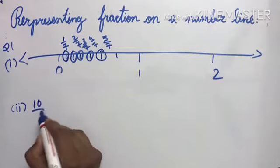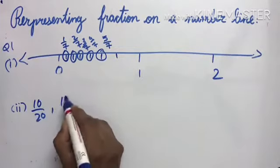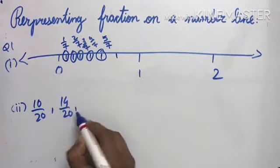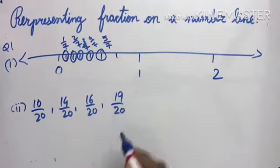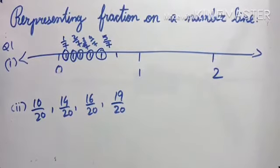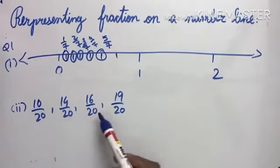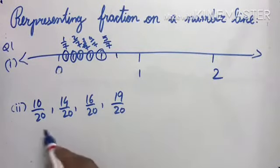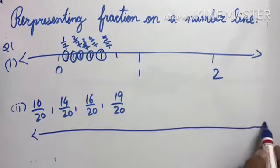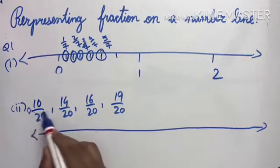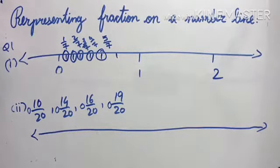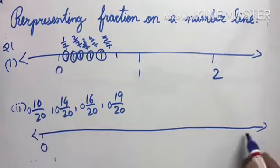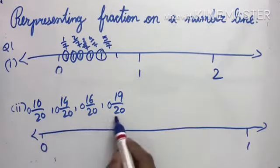Next, representing 10/20, 14/20, 16/20, and 19/20 on a number line. All of these are proper fractions. Since there is no whole number, we place 0, meaning all fall between 0 and 1. We divide the segment between 0 and 1 into 20 equal parts.